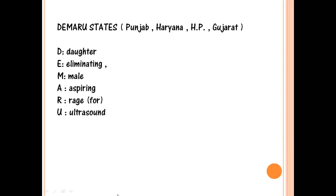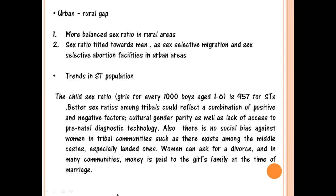Another factor for regional variation is that in South India, higher literacy levels and educational awareness make people more broad-minded, which is why they have a more balanced sex ratio. There is also an urban-rural gap: the sex ratio is tilted towards men in urban areas, partly because more facilities for sex-selective abortion are available there, and also because migration patterns in India are male-dominated — generally only male family members migrate to urban areas.